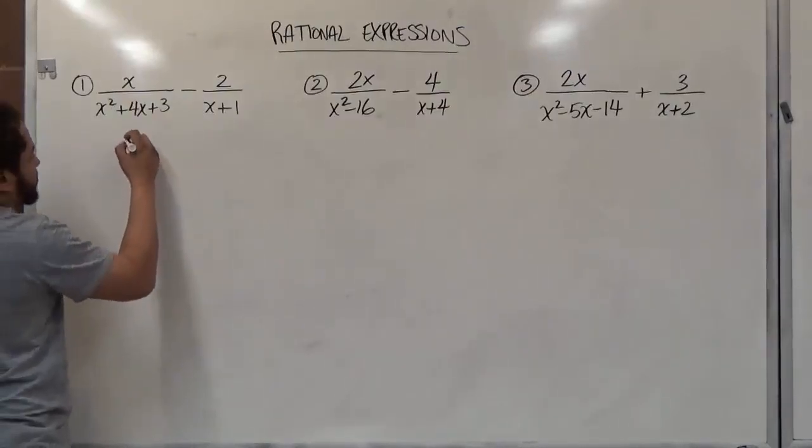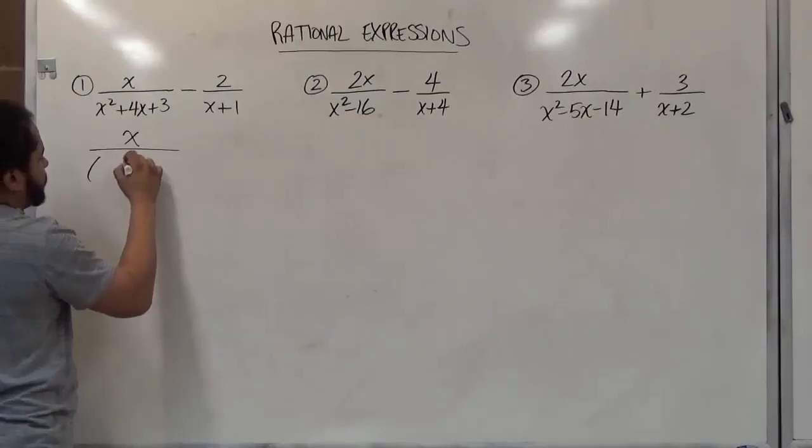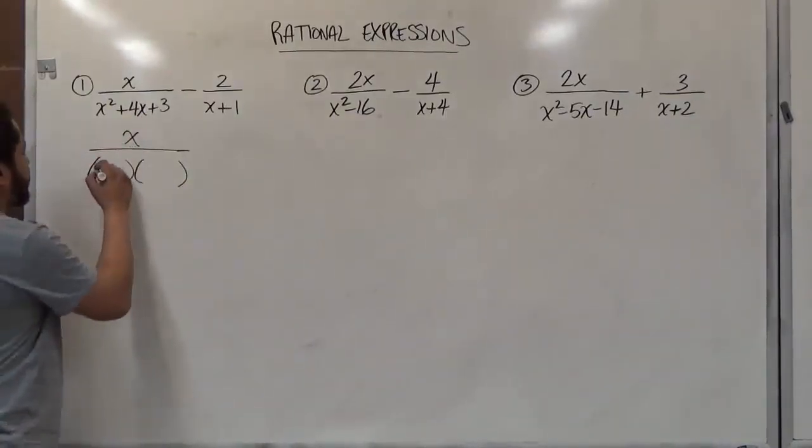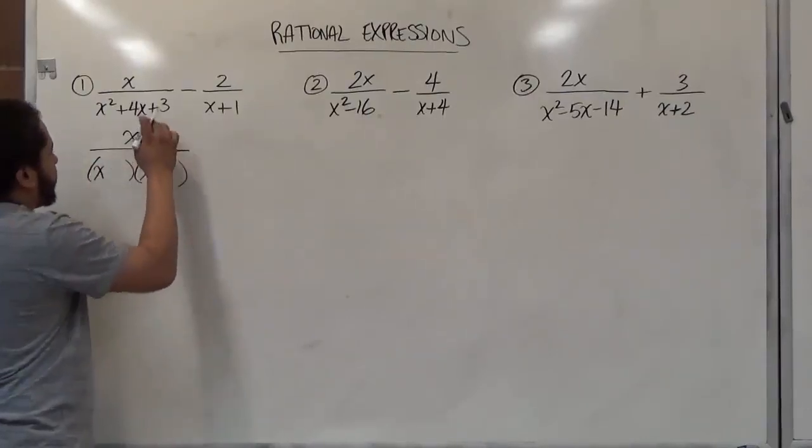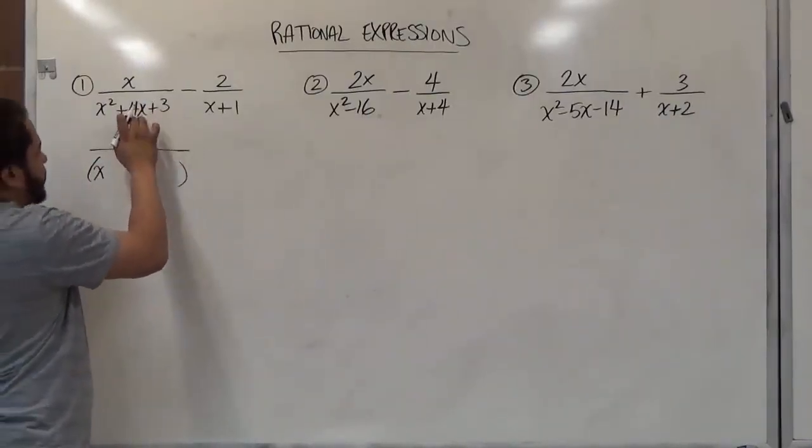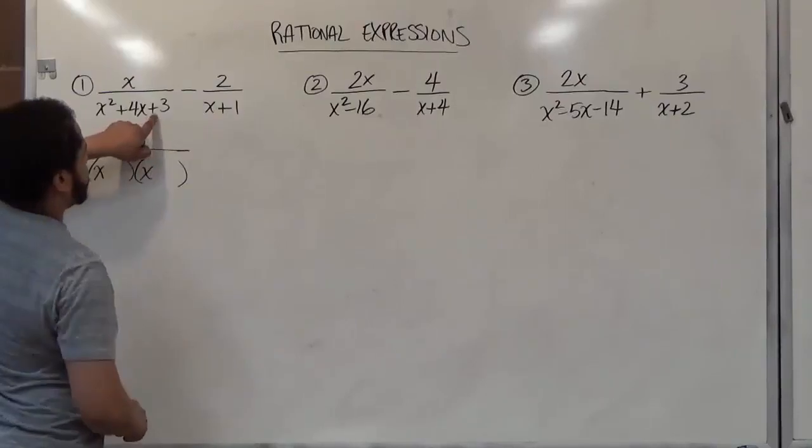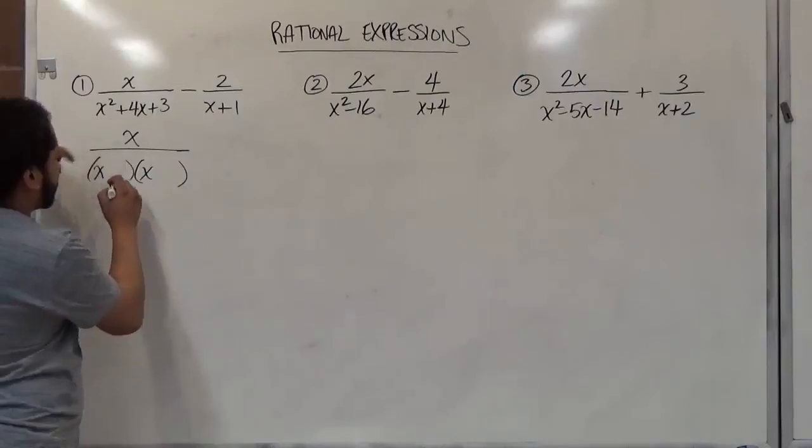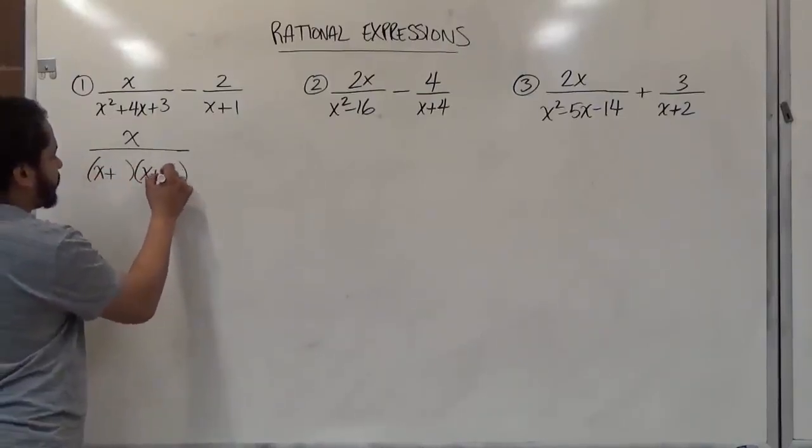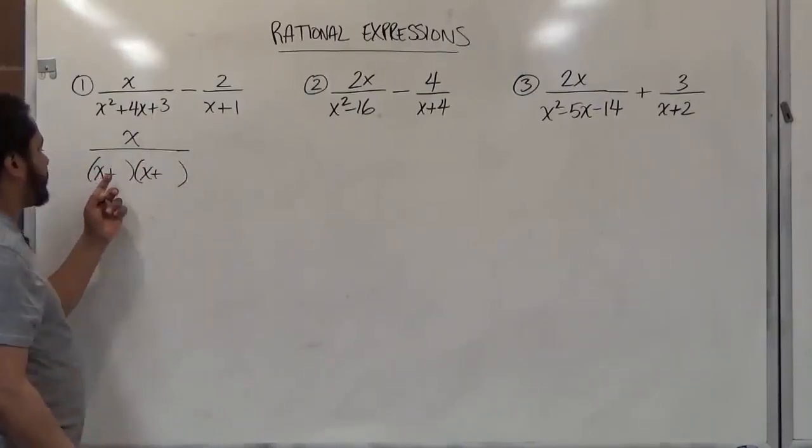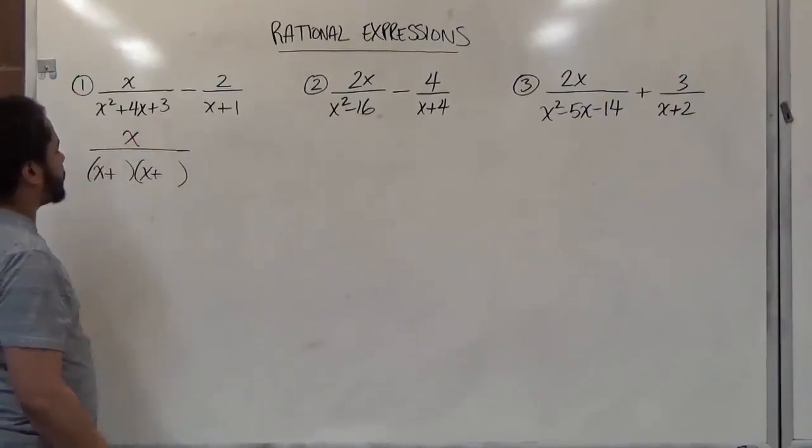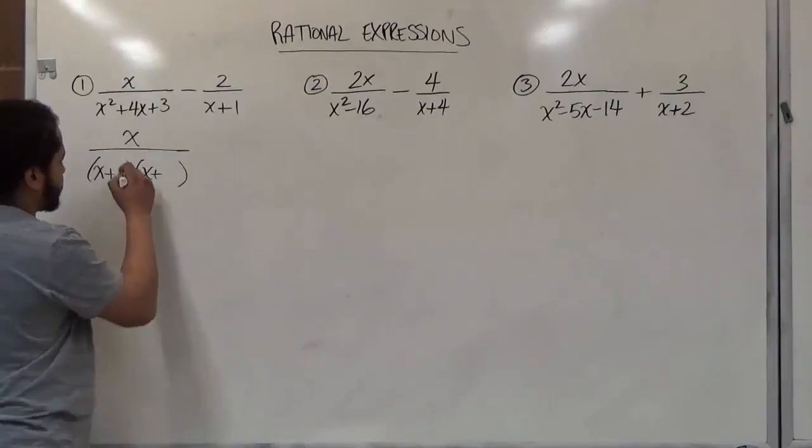So let's start by factoring the left hand side here. So we have x over, now here we have a trinomial with factors so we're looking for the factors of three and we're looking for the factors of three that add up to four. Because this ends with a plus and the middle term is also a plus we know that both factors have the same sign and they're both positive. Whenever the third term ends with a plus the middle term determines what the two signs are. And as far as the three goes the factors of three that add up to four are just three and one.